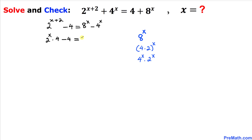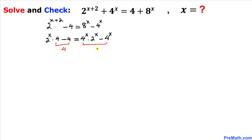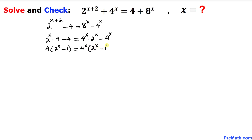We can now write the equation as 4 power x times 2 power x minus 4 power x on the right. We can see that 4 is common between the left-hand side terms, and 4 power x is common between the right-hand side terms. Factoring out 4 on the left gives us 4 times 2 power x minus 1, and factoring out 4 power x on the right gives us 4 power x times 2 power x minus 1.